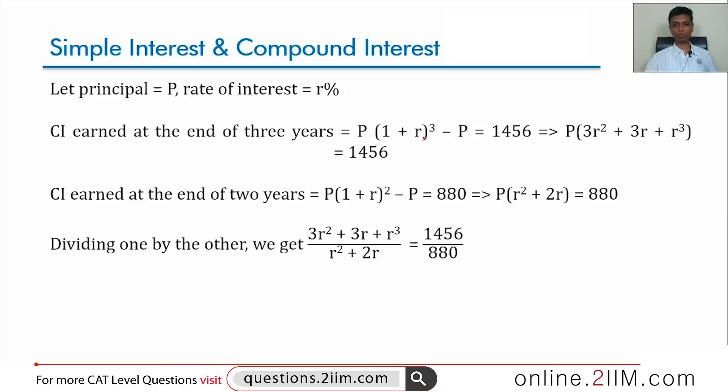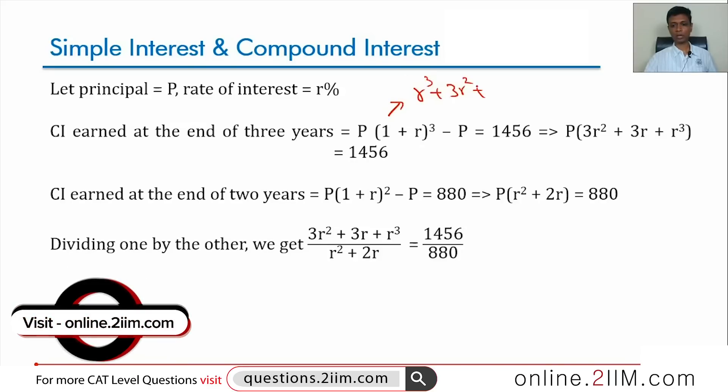This is P into 1 plus R whole cube minus P is 1456. P into 3R square plus 3R plus R cube, 1 plus R whole cube is R cube plus 3R square plus 3R plus 1. P into 1 minus P gets cancelled, P into 3R square plus 3R plus R cube, that is what remains.